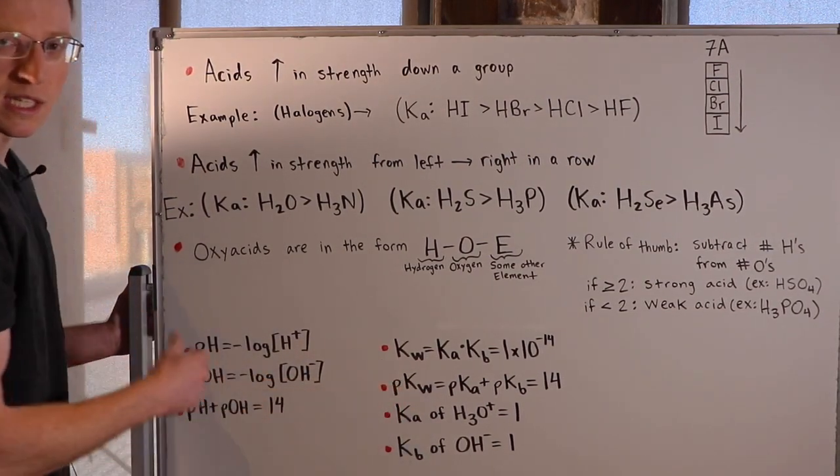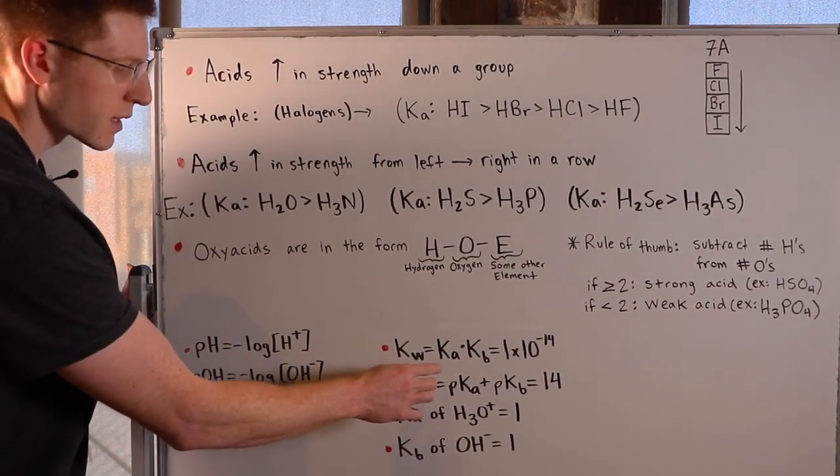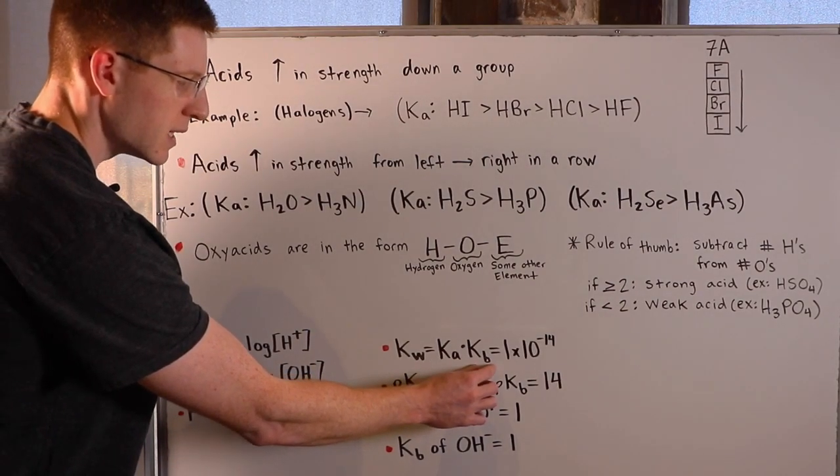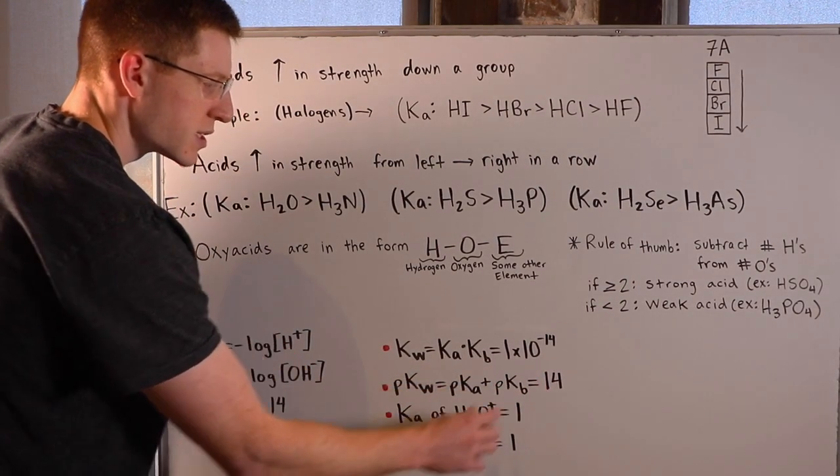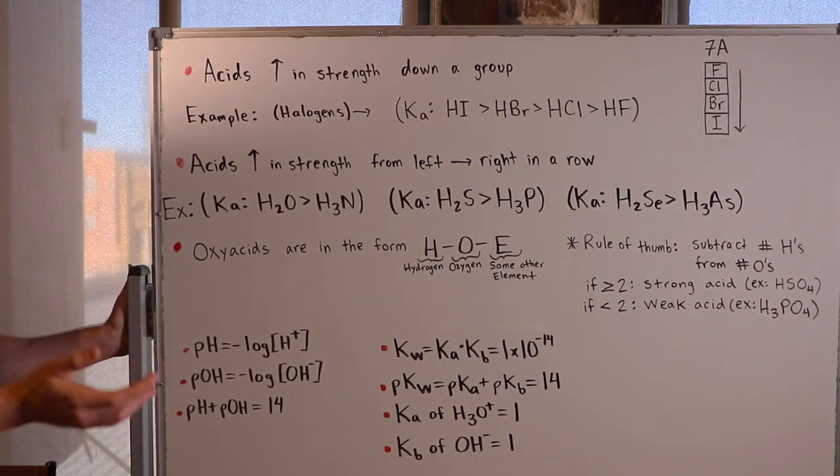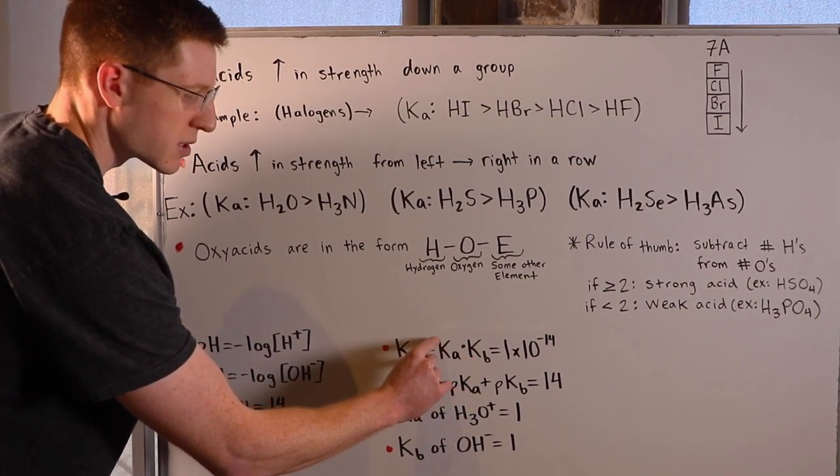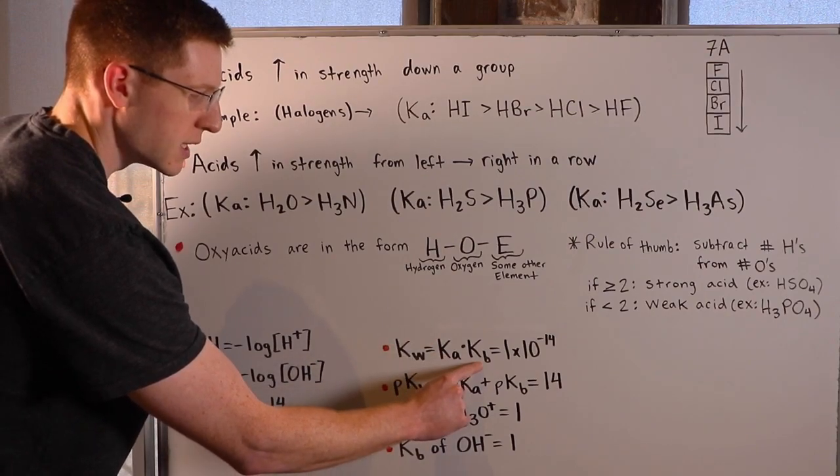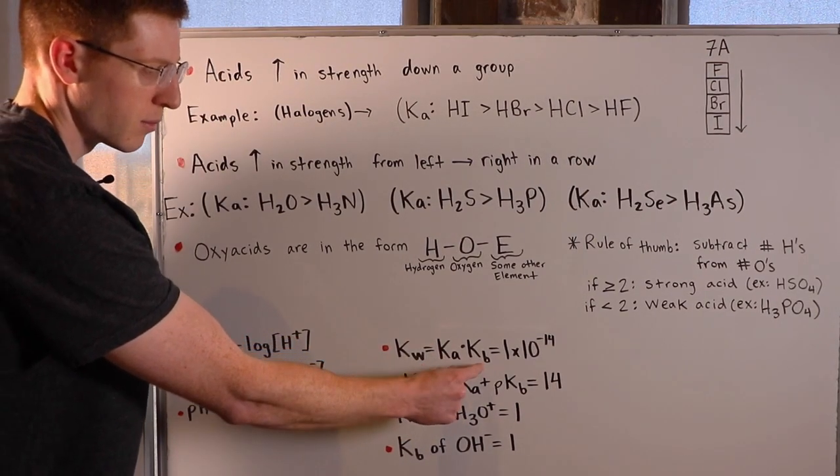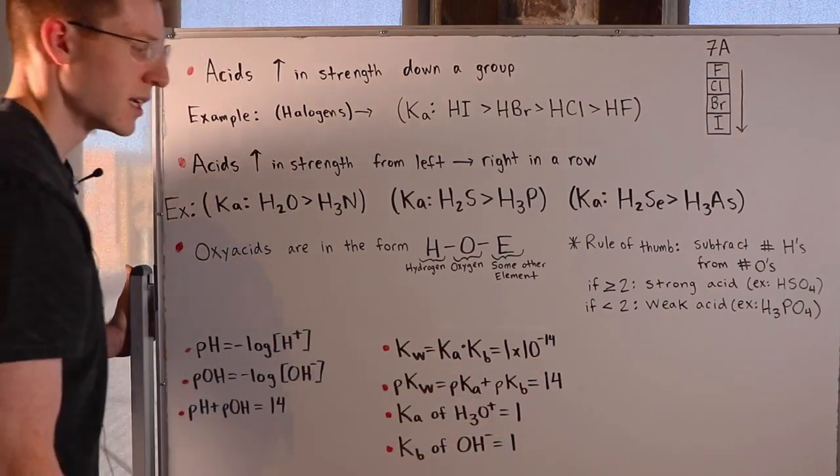Kw, which is sort of like the equilibrium constant for water, is equal to Ka times Kb, and this is equal to 1 times 10 to the negative 14. That's a great value to memorize. This means that Ka is 1 times 10 to the negative 7, and Kb is 1 times 10 to the negative 7. Multiply those together, you get 1 times 10 to the negative 14.